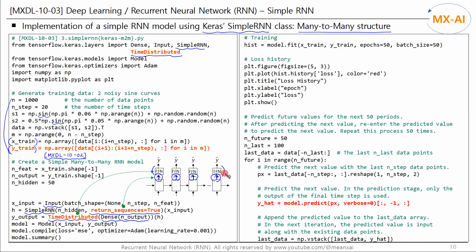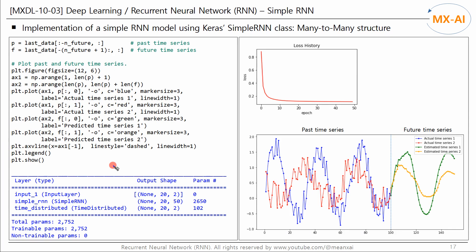The rest of the code is the same as the many-to-one code. This model outputs multiple Y-hats from all time steps, so when predicting the next time-series value, only the final output is used. The parameters of this model are also 2,752 — the same as the many-to-one model — because only the network structure has changed, not the number of parameters. The past time series and the predicted future time series results are similar to the previous code.